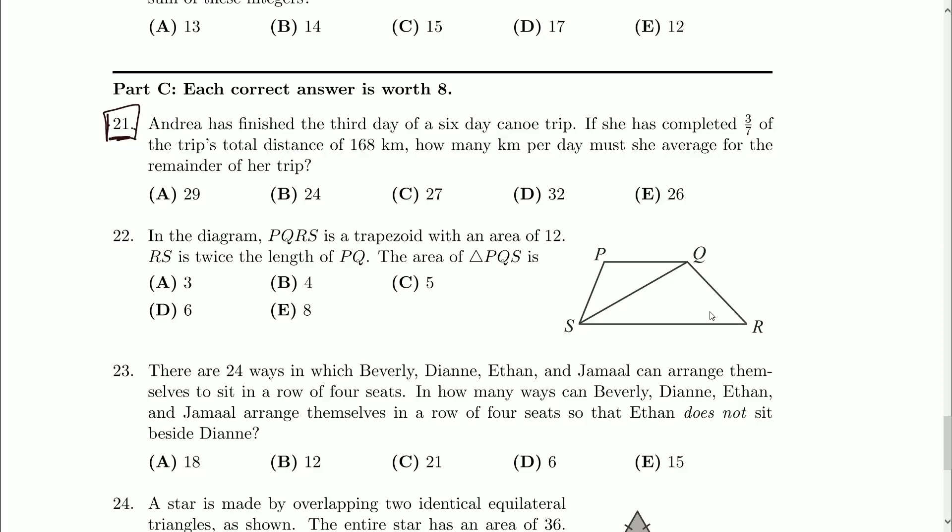Andrea has finished the third day of a six-day canoe trip. If she has completed three-sevenths of the trip's total distance of 168 kilometers - 168 is 7 times 24, I know this because there's seven days in a week and 24 hours in a day, so this number 168 does come up a fair bit. How many kilometers per day must she average for the remainder of her trip?